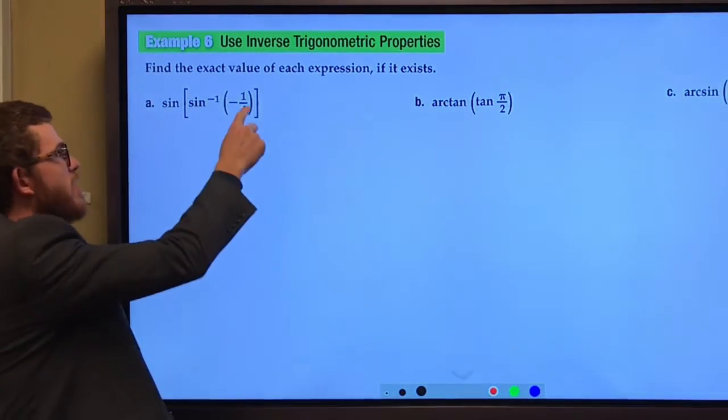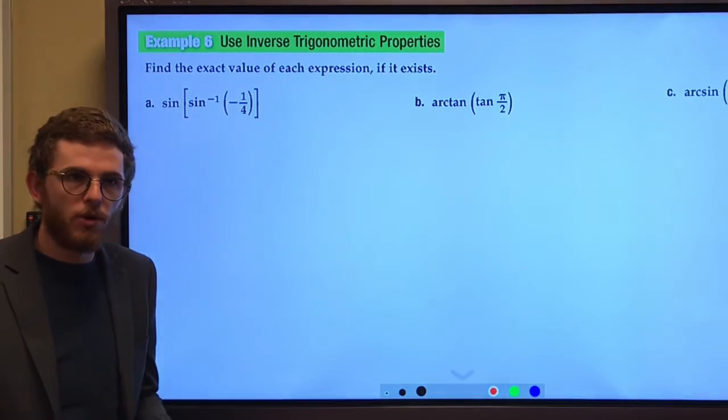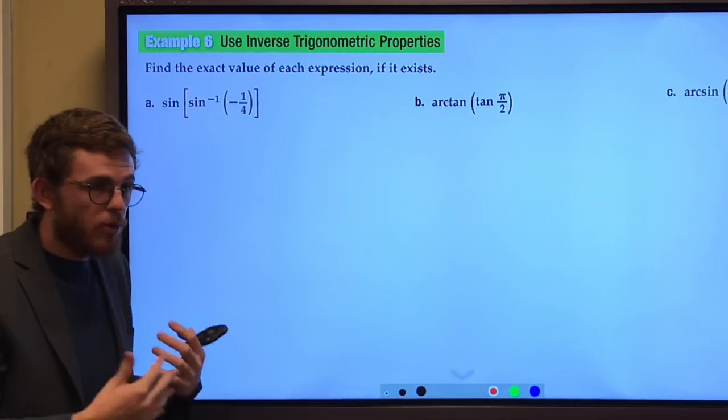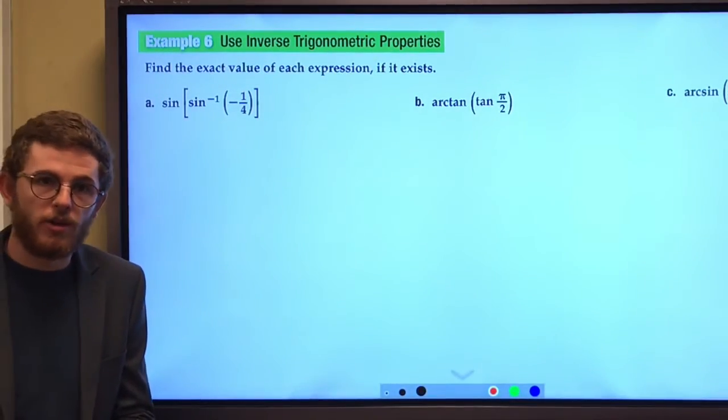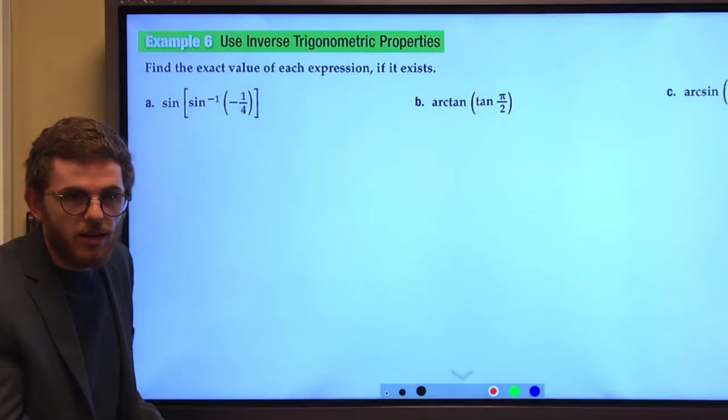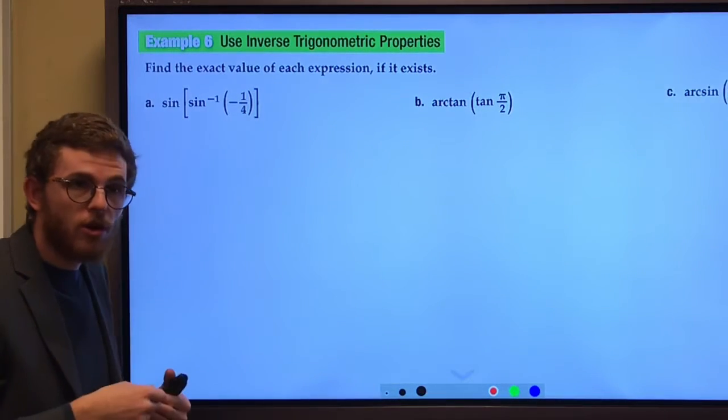Because that value, negative one-fourth, is between zero and one, there is an angle that will possibly get a negative one-fourth as our sine value, it's possible. Because that is between negative one and one, it is possible to get that value out.